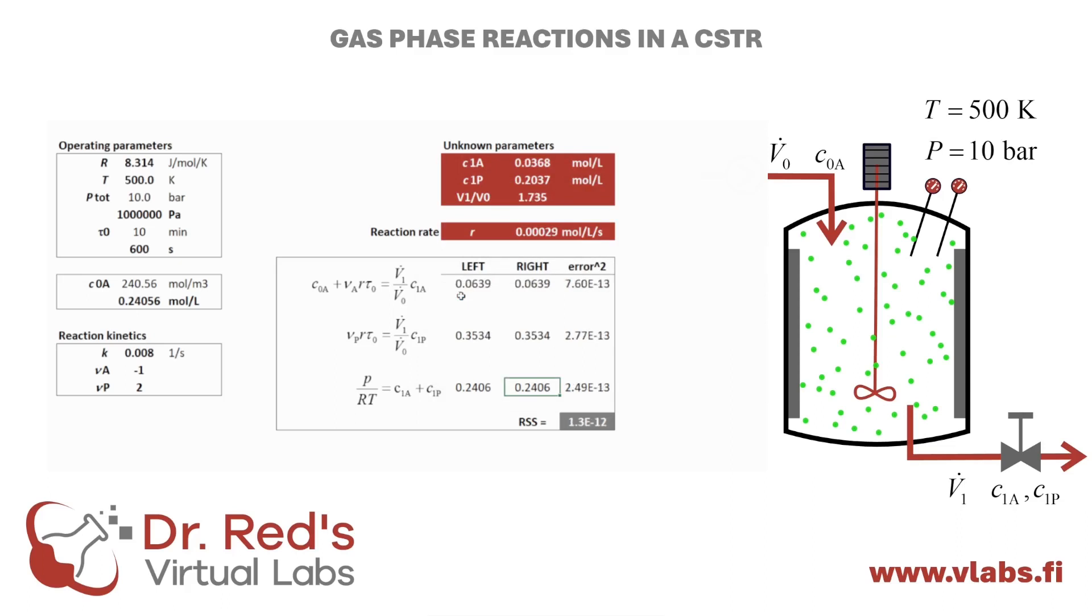The solution appears reasonable, and the errors are notably small. According to the obtained solution, the volumetric flow rate increases by a factor of 1.73 due to the change in molar amount in the reaction.